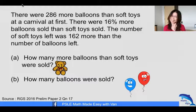Let's take a look. There were 286 more balloons than soft toys at a carnival at first. There were 16% more balloons sold than soft toys sold. The number of soft toys left was 162 more than the number of balloons left. Part A: How many more balloons than soft toys were sold?